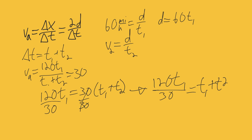So now I am left with 120 t1 over 30 equals t1 plus t2. 120 over 30 gives me 4. And if I subtract my t1, 4 t1 minus t1 equals 3 t1 equals t2.